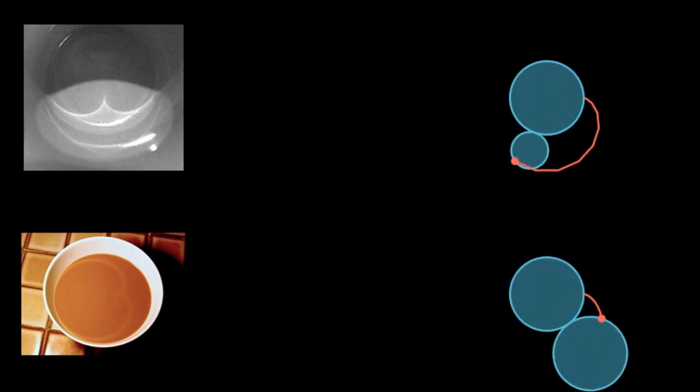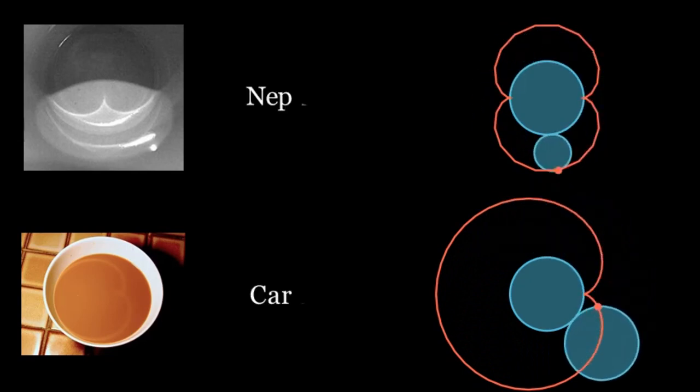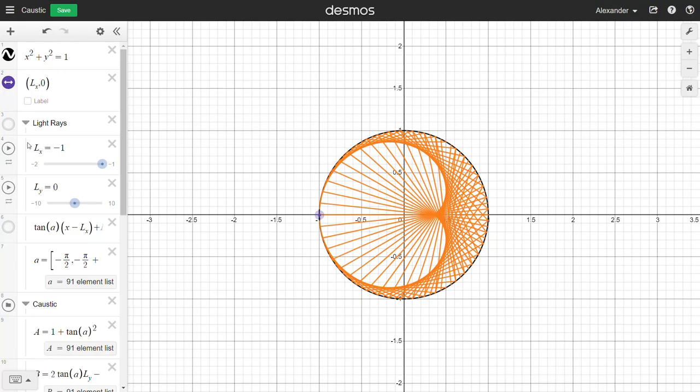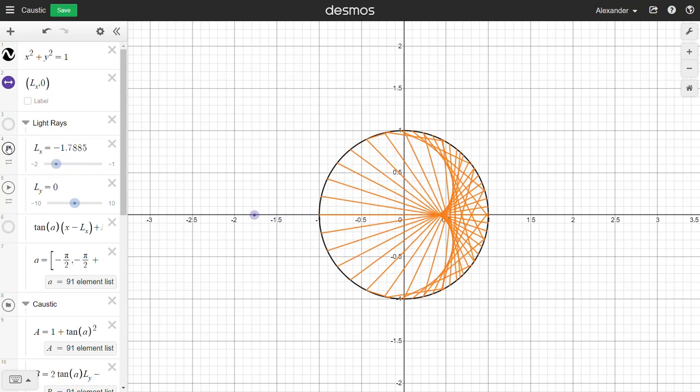Epicycloids often appear as caustics, the shapes that are generated when light is reflected by a curved surface. Common types of caustics include cardioids and nephroids. Using this calculator powered by Desmos, we can see that if the light source is placed on the circular mirror, the caustic generated is a cardioid. If the light source is placed away from the mirror, the caustic generated is a nephroid.